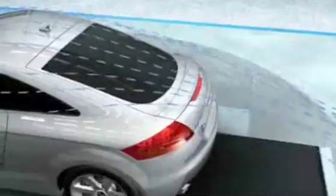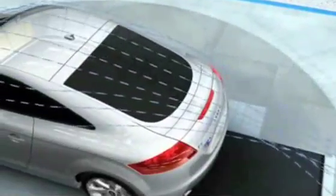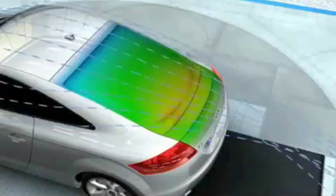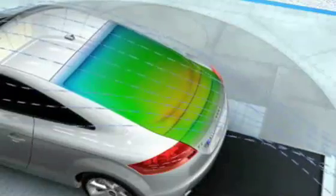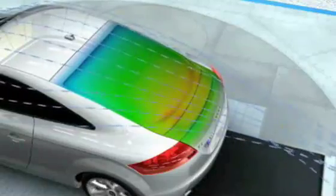It's possible to see the effect more clearly by looking at the pressure distribution on the vehicle's surface at the rear end. In the illustration, high pressure is colored in red and low pressure in blue.